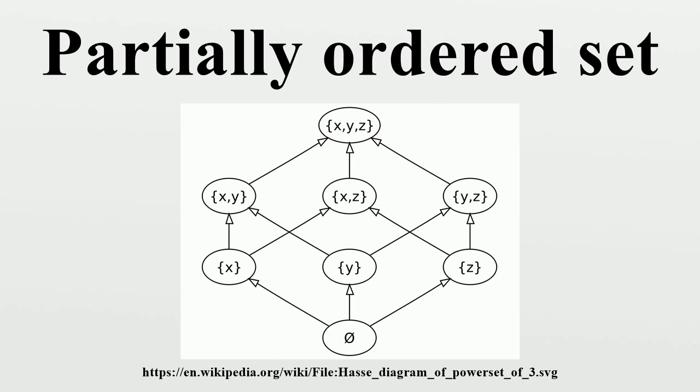Formal Definition: A partial order is a binary relation over a set P which is reflexive, antisymmetric, and transitive, which satisfies for all A, B, and C in P: A ≤ A; if A ≤ B and B ≤ A, then A equals B; if A ≤ B and B ≤ C, then A ≤ C.